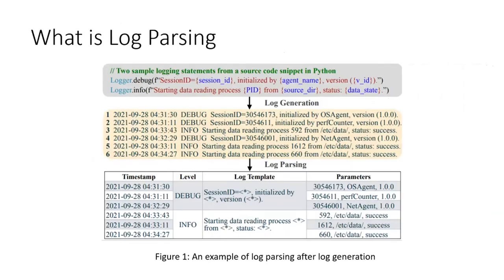So what is log parsing? Logs are generated from various logging statements in the source code during software execution and collected in an online manner. A typical log contains the log header and the log message, which further consists of two elements. The first is static text, fixed in source code to represent system events, namely log templates — for example, "session ID initialized by version." The second is dynamic variables, which reflect system runtime data that varies across different executions, called log parameters — for instance, 30546173, OS agent, and 1.0.0 are parameters generated from three different variables. The goal of log parsing is to extract the static log templates and the dynamic log parameters from a raw log message.